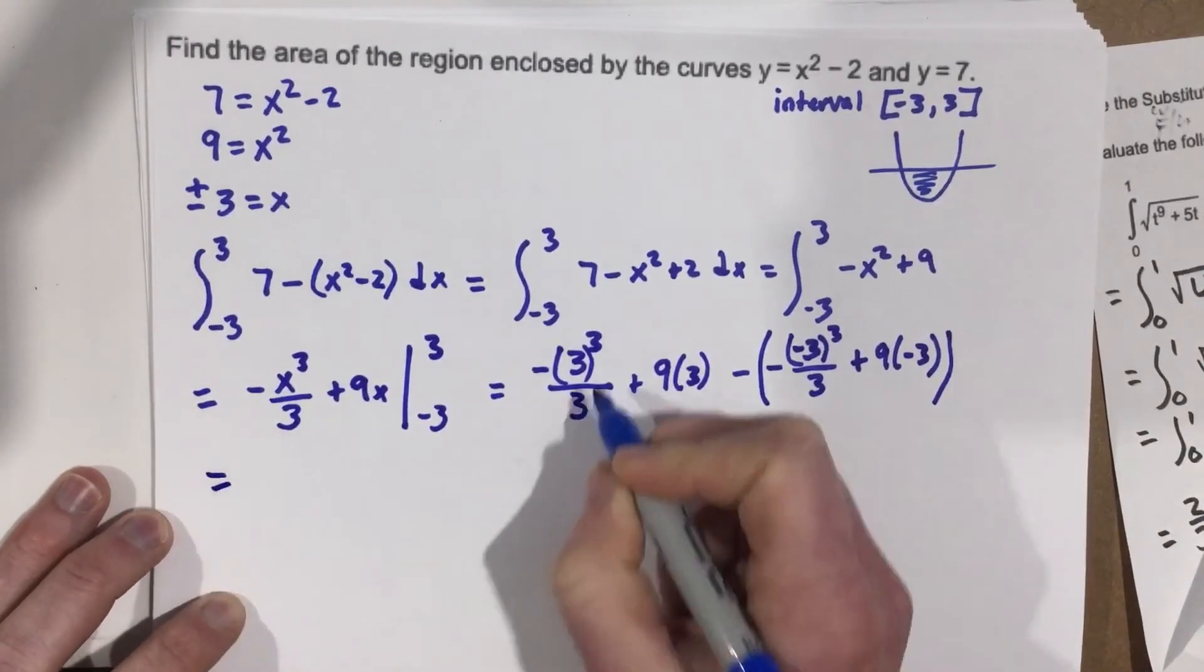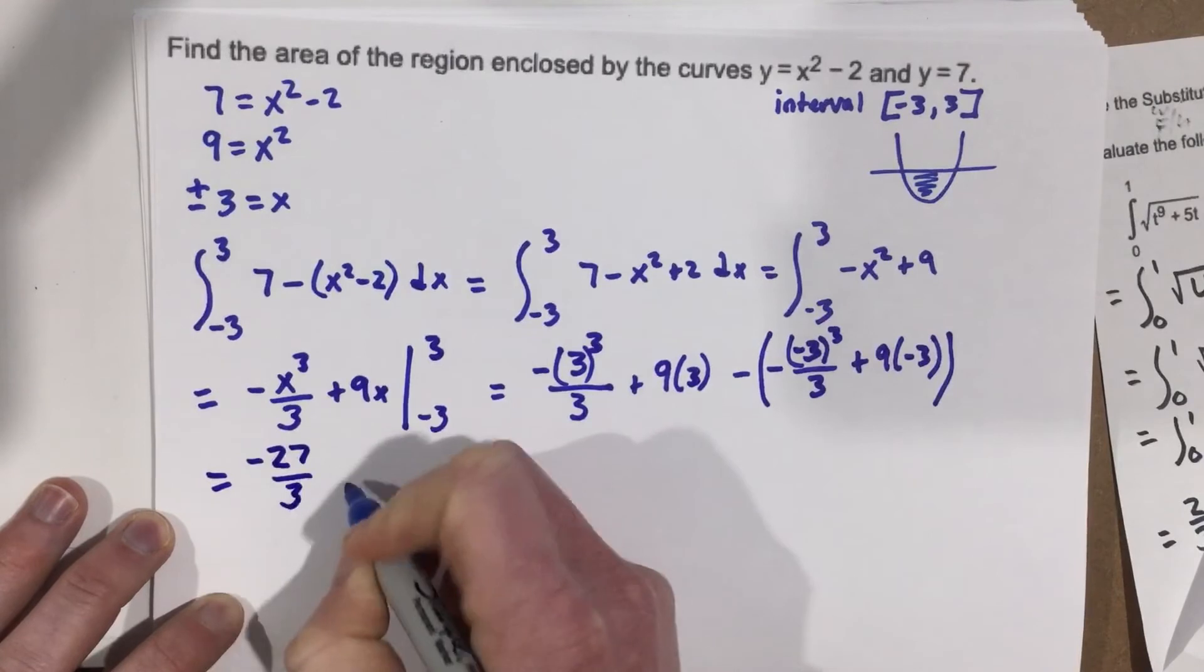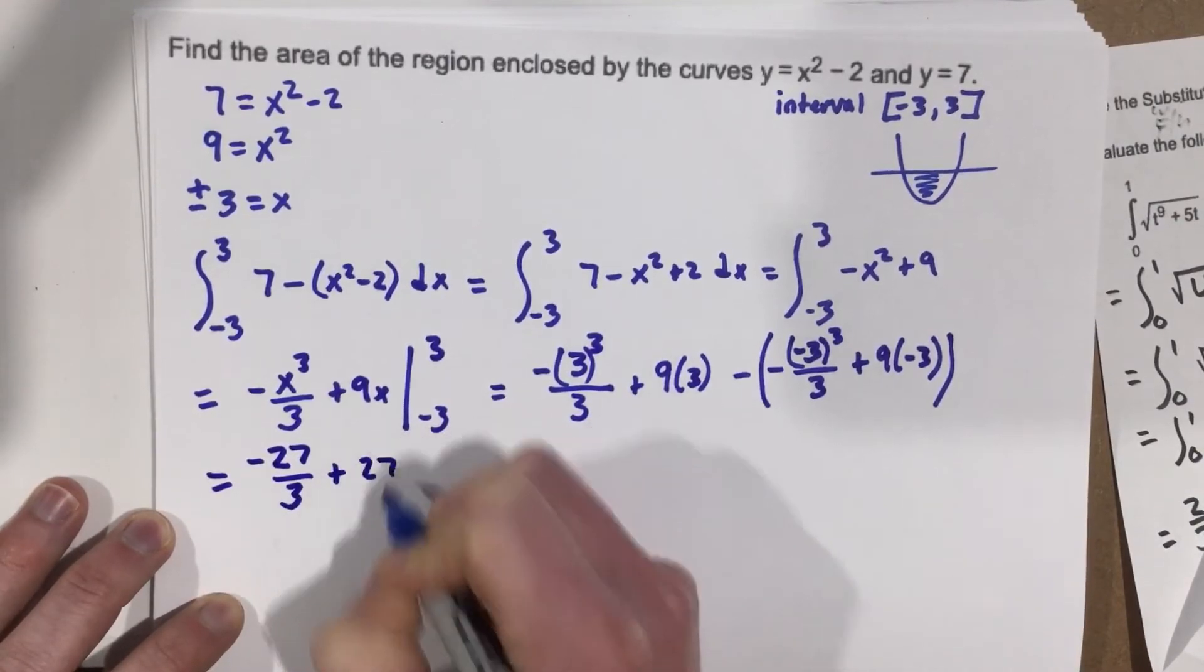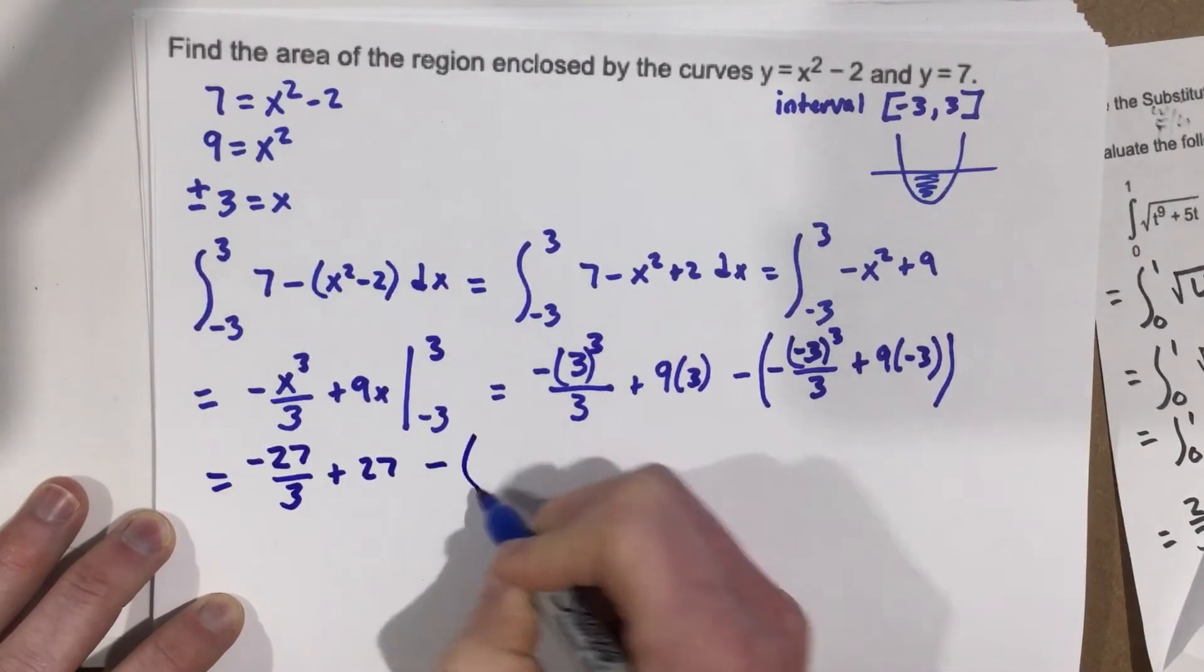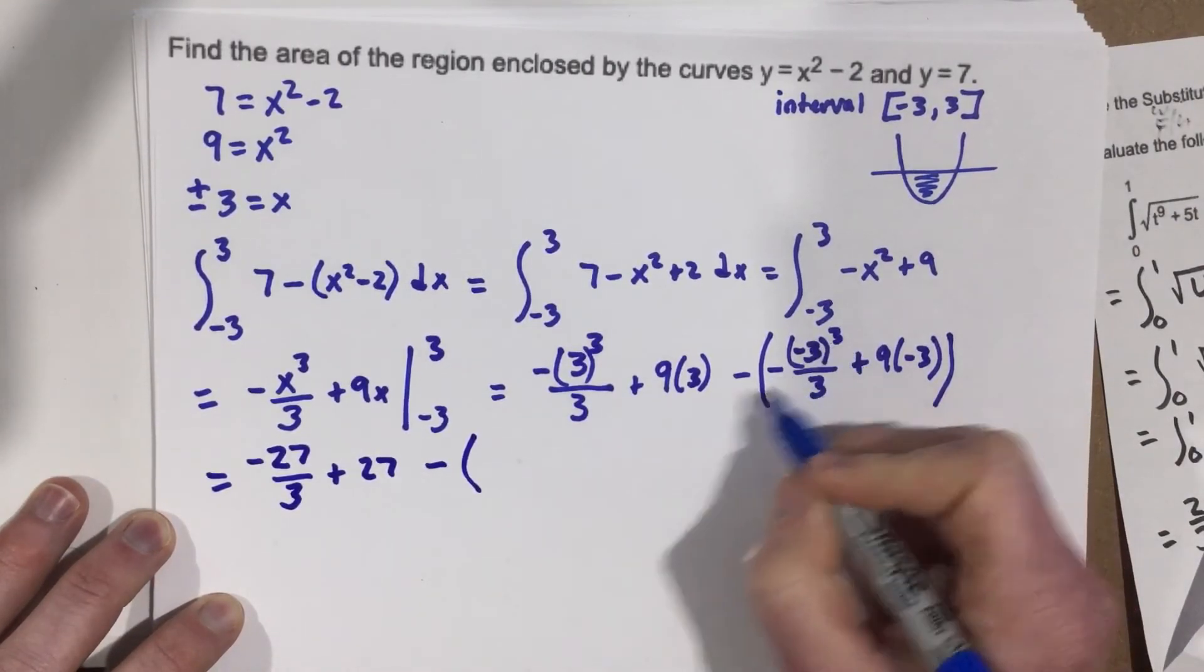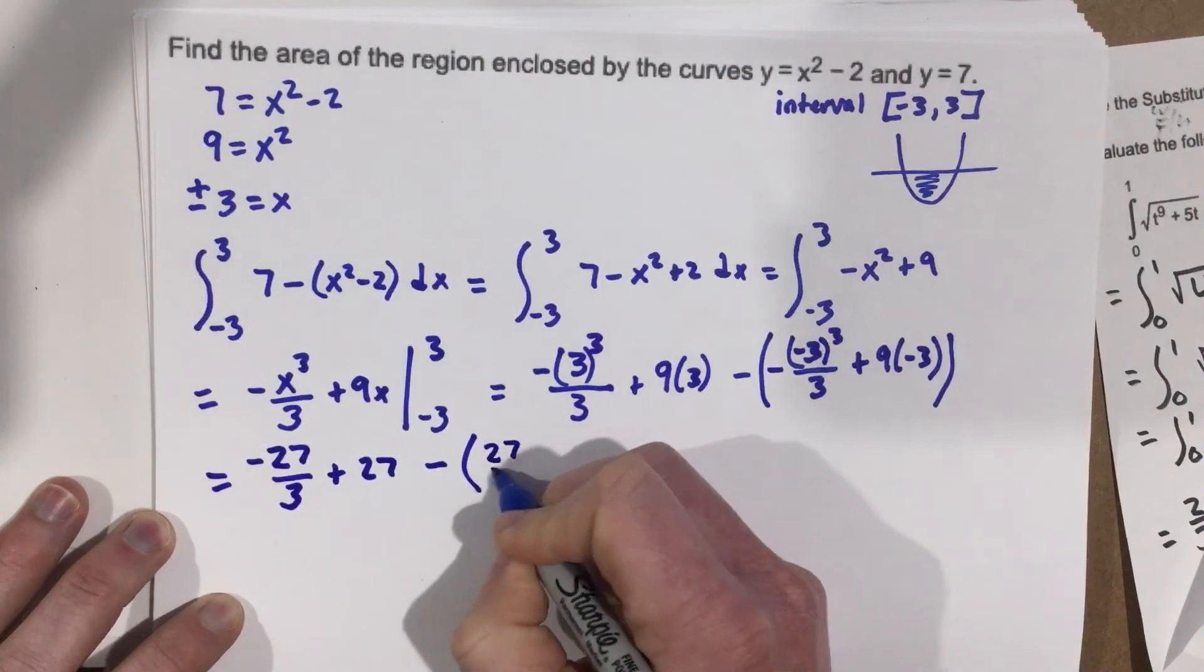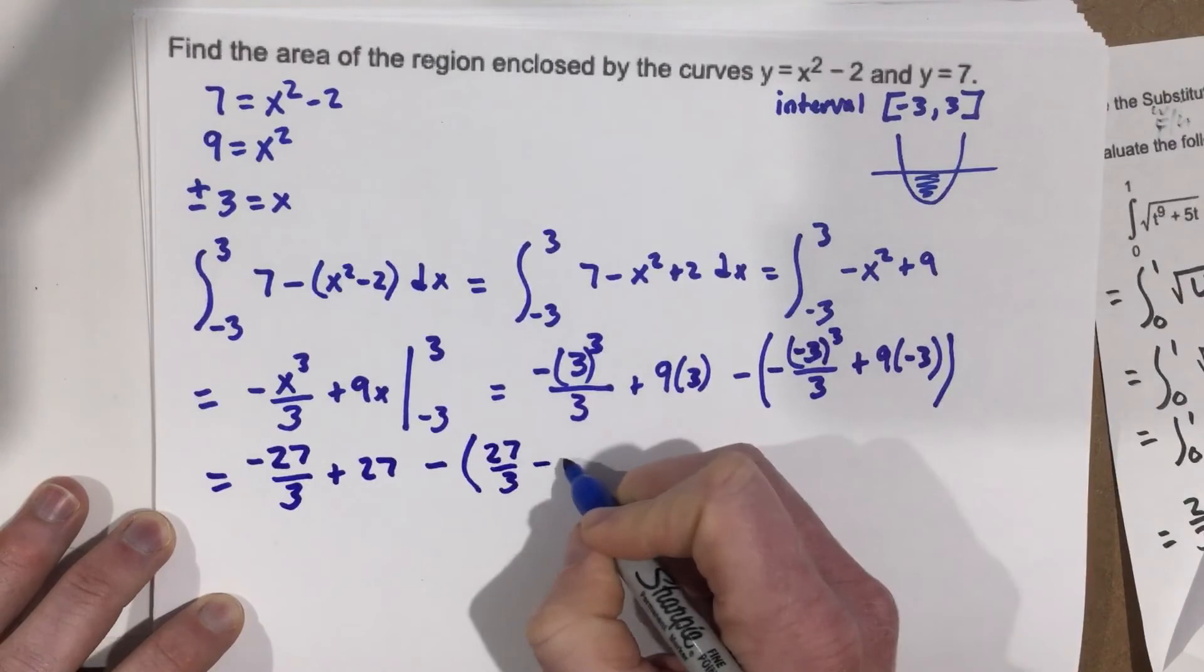So that's going to equal negative 27 over 3 plus 27 minus... And here we're going to get negative 3 cubed. That's negative 27. So it's actually 27 over 3 because of the other negative. Minus 27.